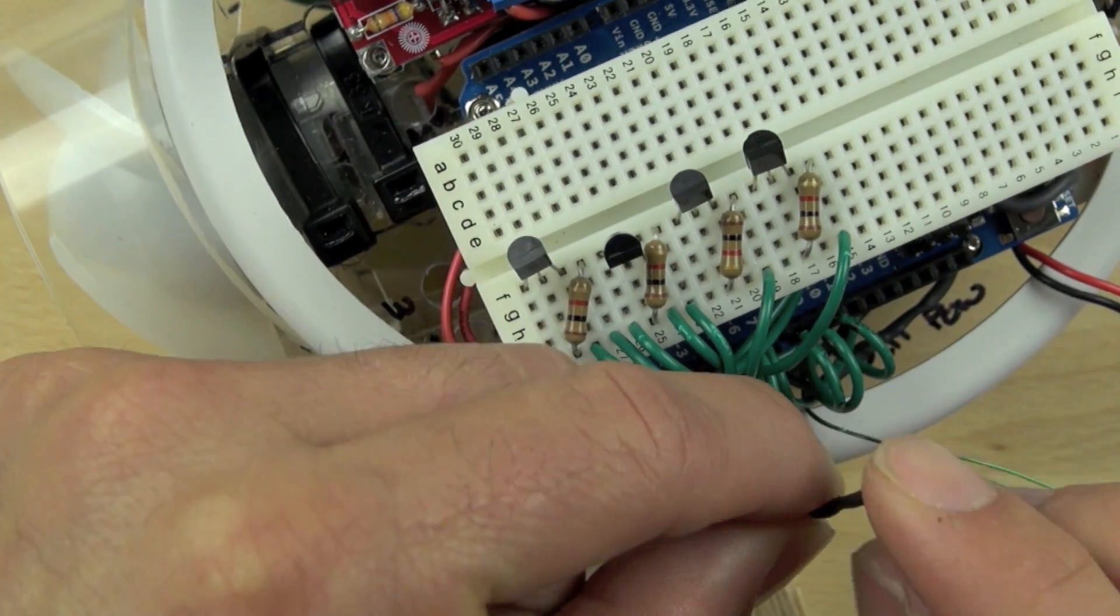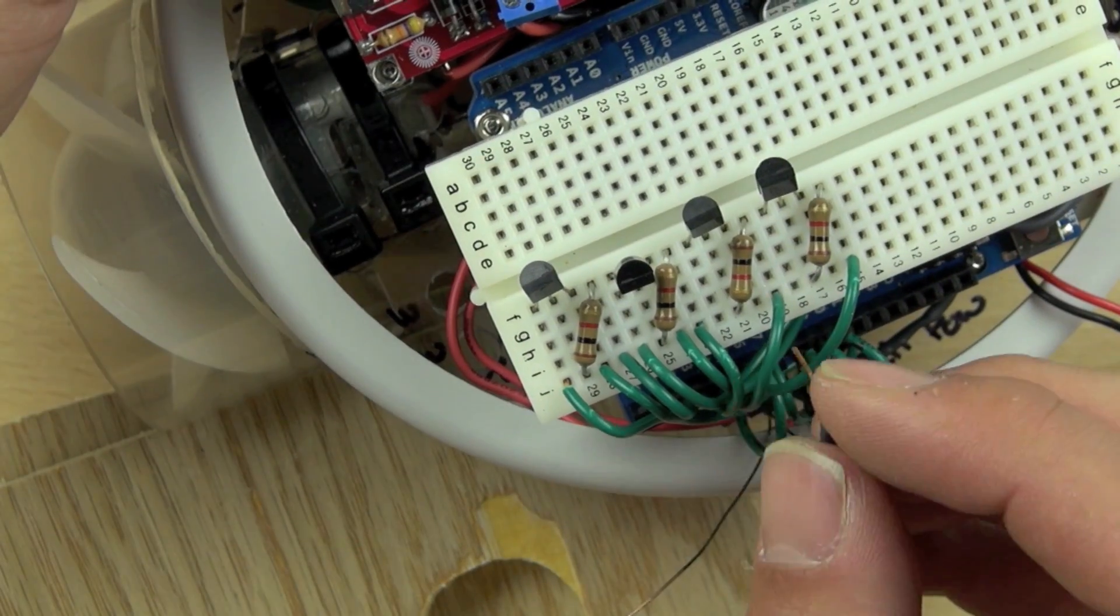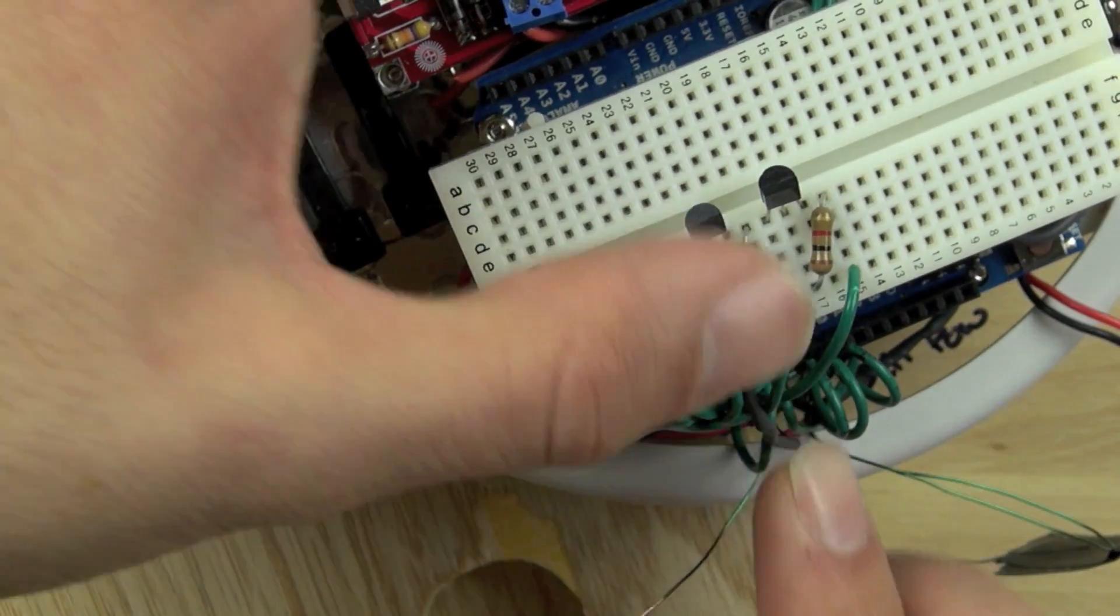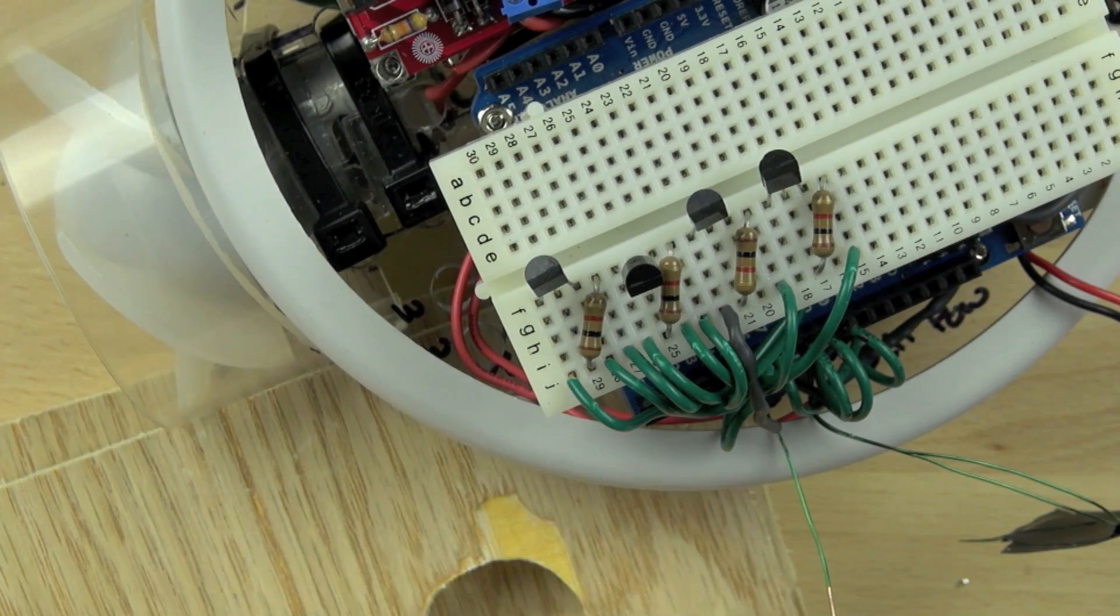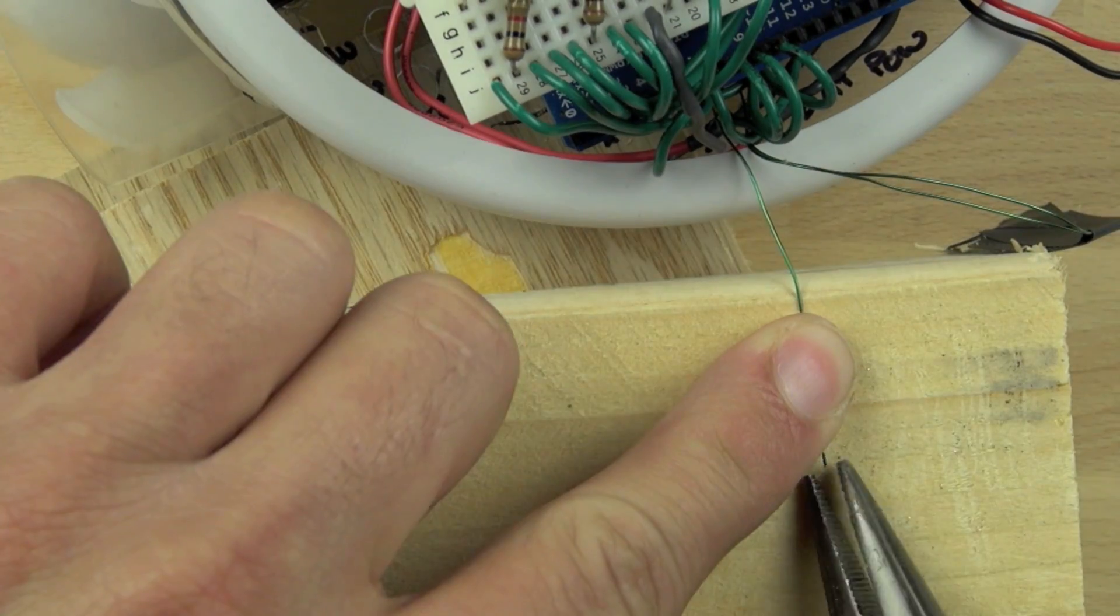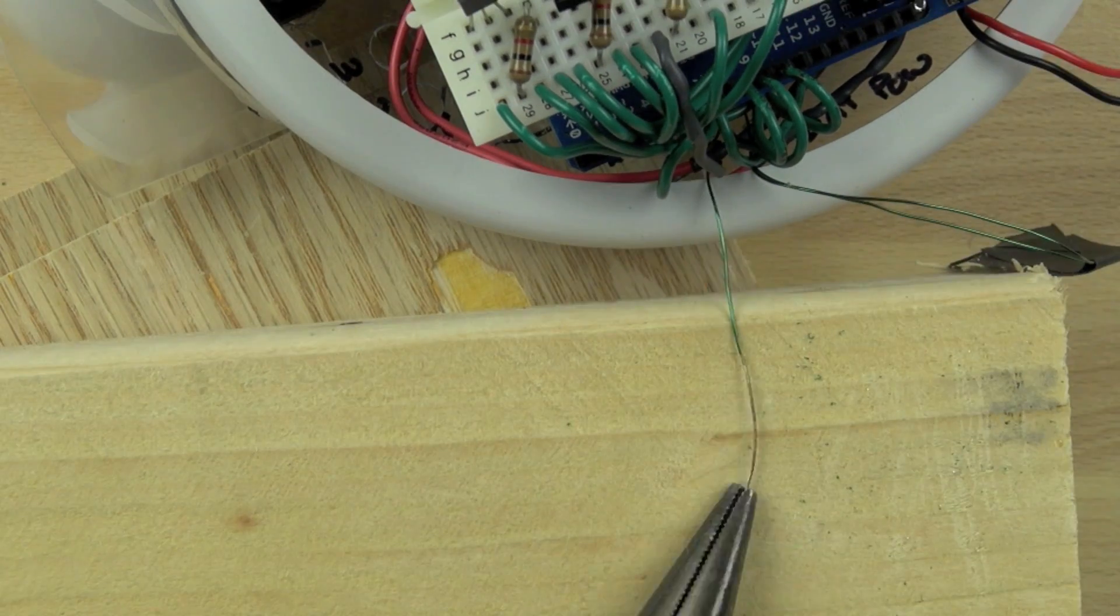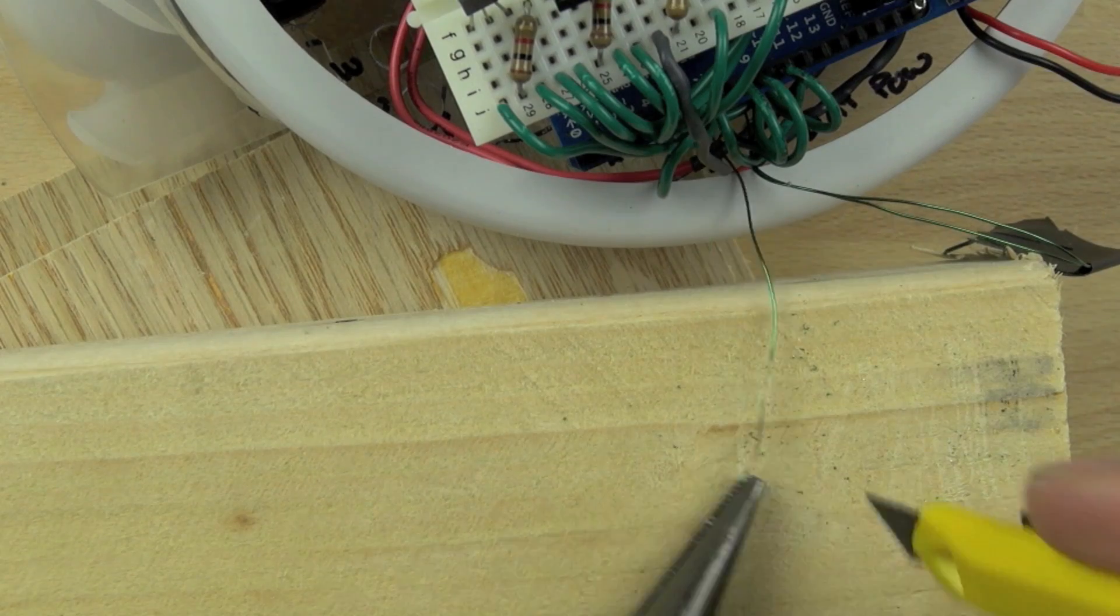We can just bend that wire right into place and that goes on the left side of our transistor and that is going to be our emitter side. Now we're going to do the collector side.